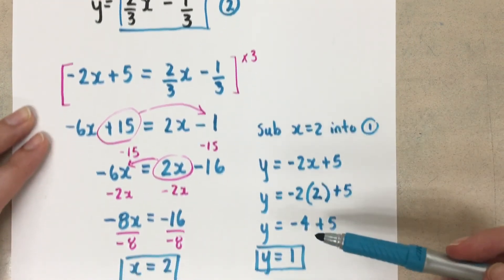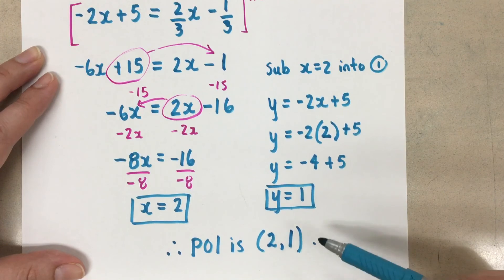The solution to the system is the point where the two lines cross, and that happens at 2, 1.